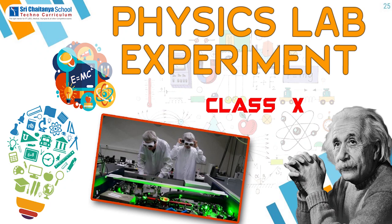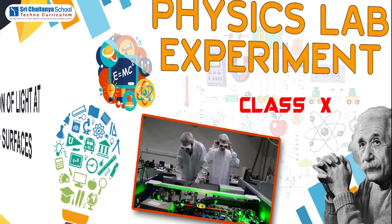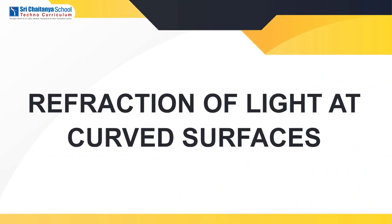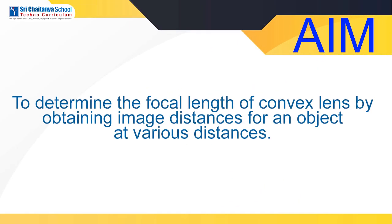Hello children. Now we are learning a physics lab experiment for 10th standard. This experiment is from the chapter Refraction of Light at Curved Surfaces. The aim of this experiment is to determine the focal length of a convex lens by obtaining image distance for various object distances.